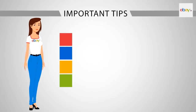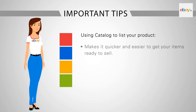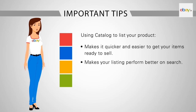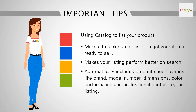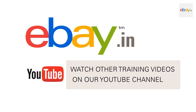Important tips: Using a catalogue to list your product makes it quicker and easier to get your items ready to sell, makes your listing perform better on search, and automatically includes product specifications like brand, model number, dimensions, colour, performance, and professional photos in your listing. We hope you have enjoyed watching this video. Watch other training videos on our YouTube channel.